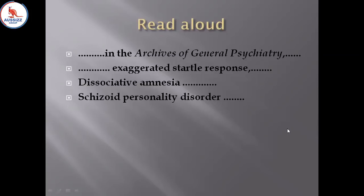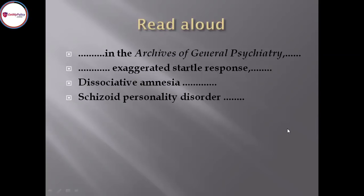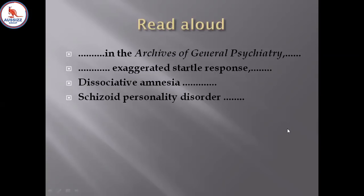The first line is: 'In the archives of general psychiatry.' If I'm able to speak it correctly, only then I'll be getting the score for pronunciation and content. The content score goes to your reading section. Remember: in speaking, there are two enabling skills — fluency and pronunciation — but the content part is really crucial because the content score goes to the other module.